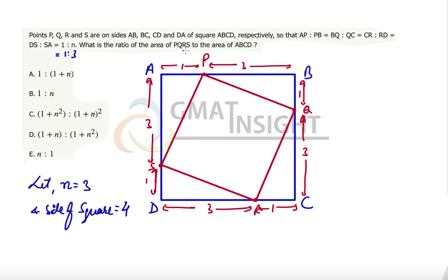What is the ratio of areas of PQRS to the area of ABCD? The area of PQRS can be calculated by subtracting these 4 corner triangles from the area of the square. Area of the square ABCD is 4 squared minus 4 triangles, and each triangle has area half of 1 times 3. So that becomes 16 minus 6, that is 10.